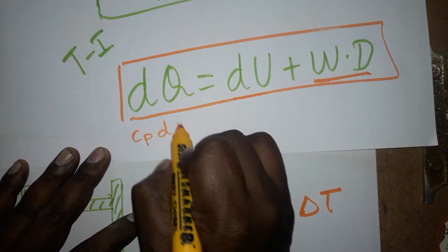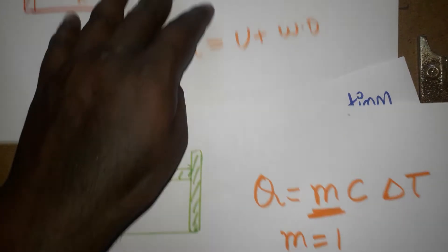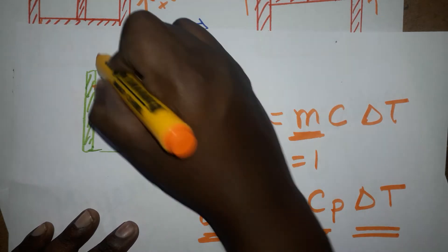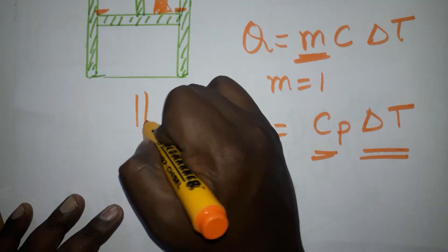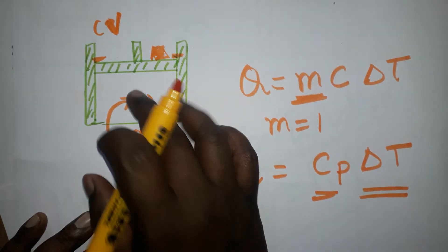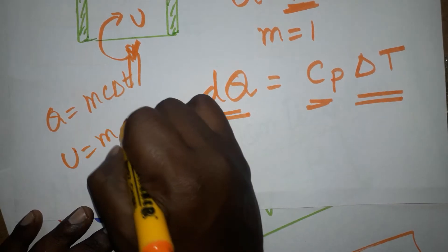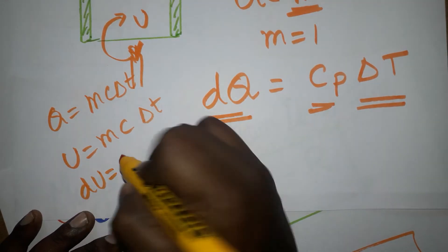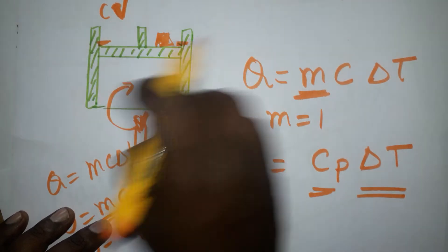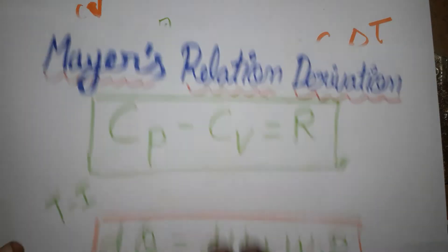Now for the same system, I maintain volume as constant — we keep some weight on the piston to fix it. When we give heat energy, all of it converts into internal energy. We know Q equals m·c·dT, so internal energy U equals m·c·dT. Taking molar mass as one at constant volume, the total internal energy is Cv·dT.